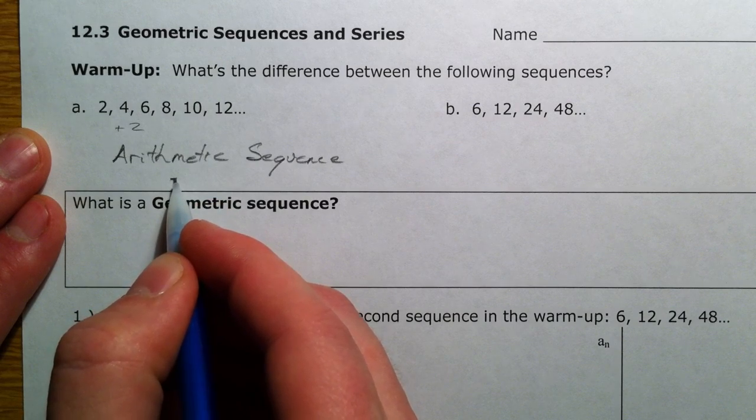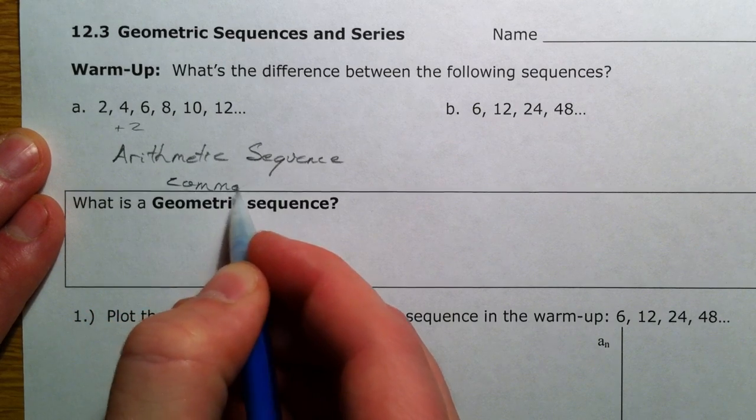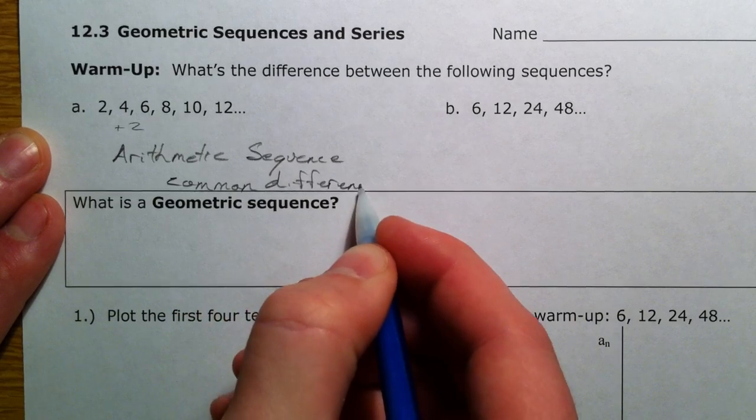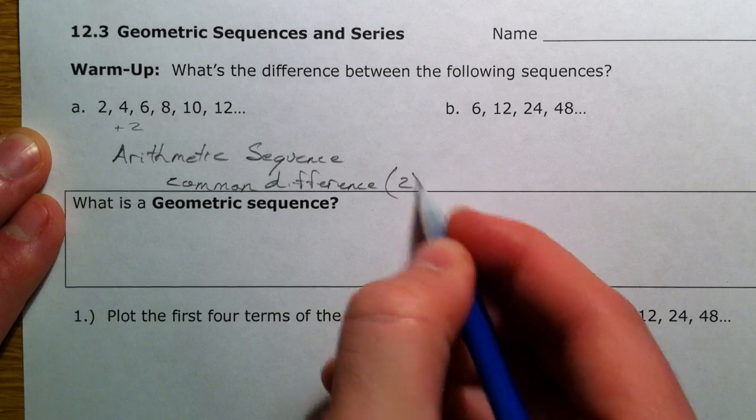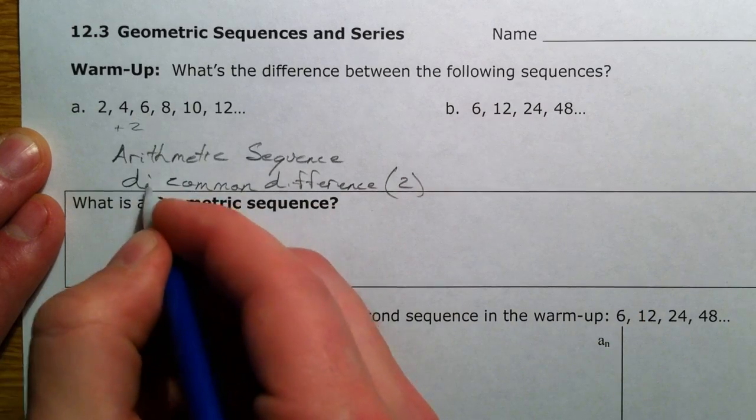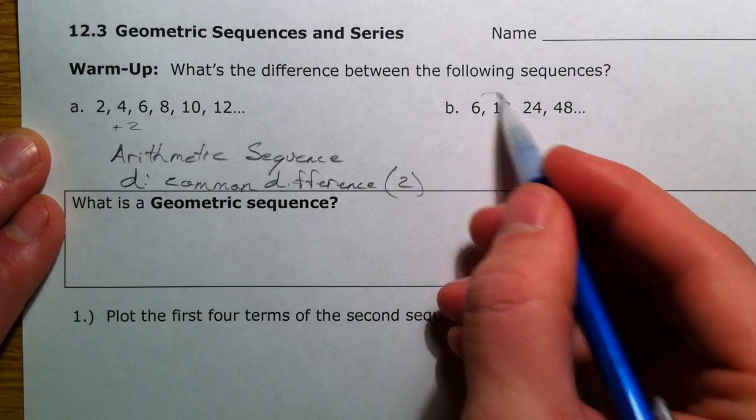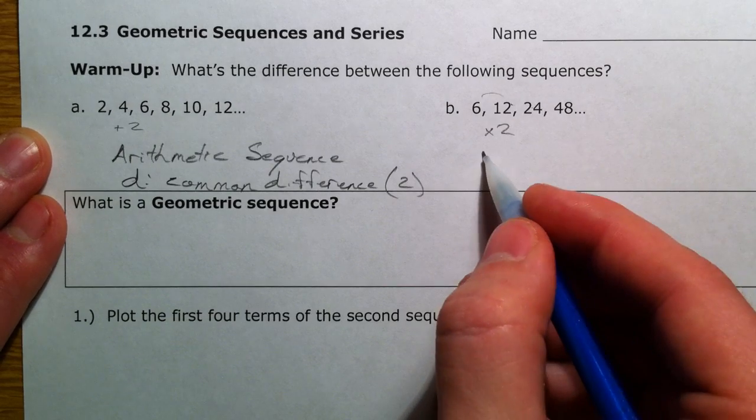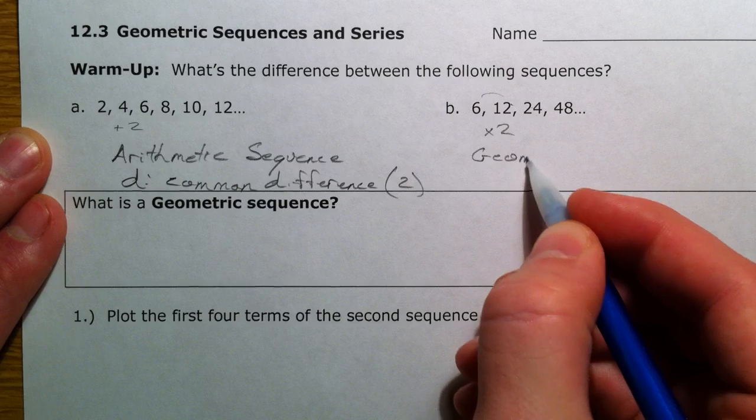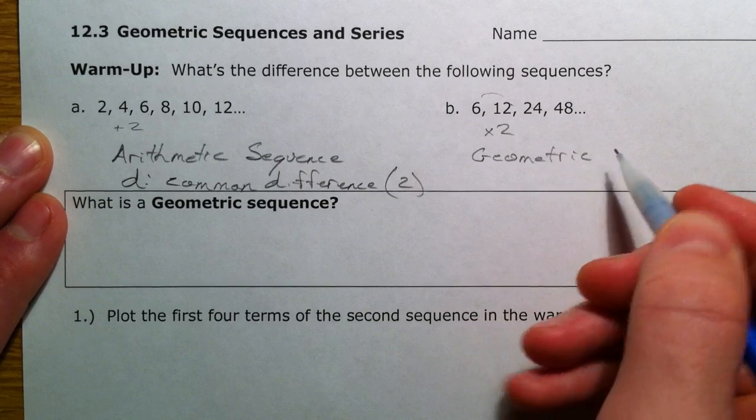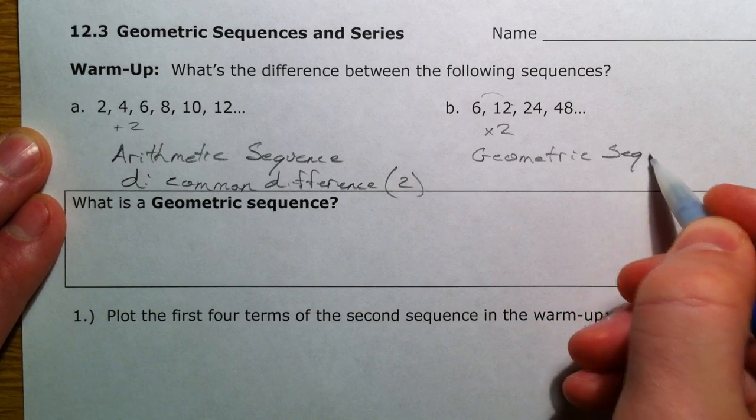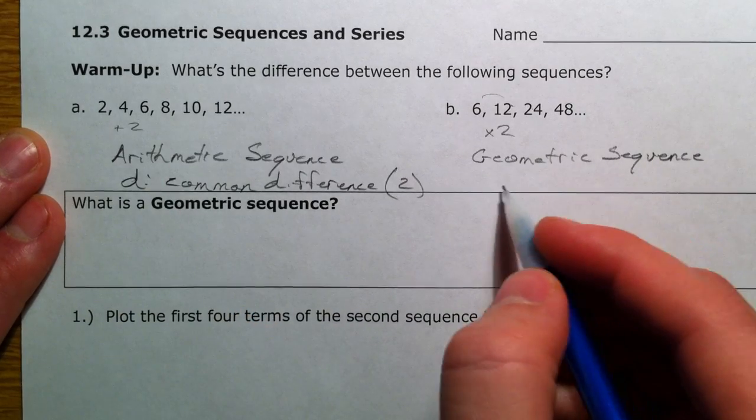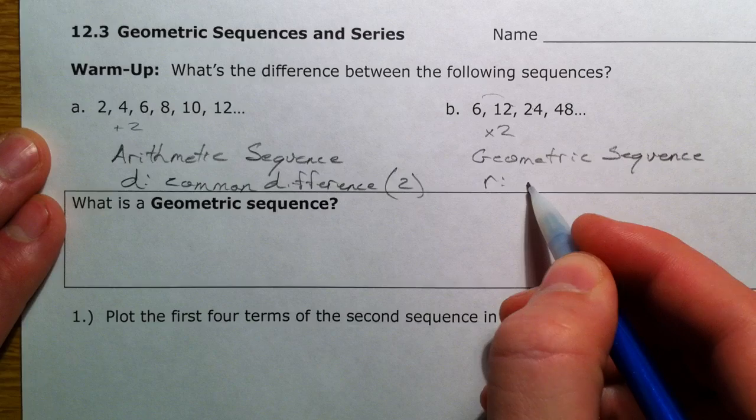Because the common difference was 2. Common difference is what we call D. And then here we're multiplying by 2 every single time. And so this is what we're going to call a geometric sequence.